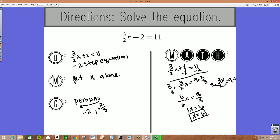2 divided by 2, those will cancel. And I have 3x equals 18. Then to get x alone, I would divide by 3. 3 divided by 3 is 1x. 18 divided by 3 is 6. 1 times x is 6, so x equals 6.